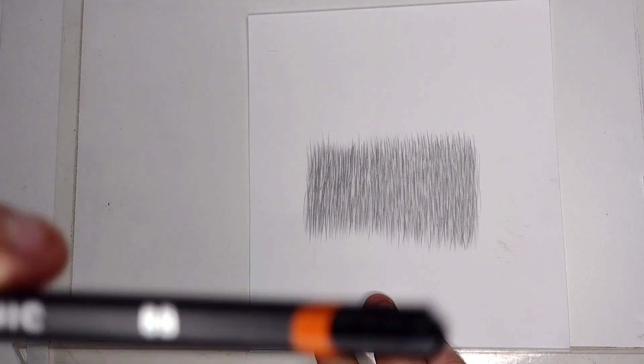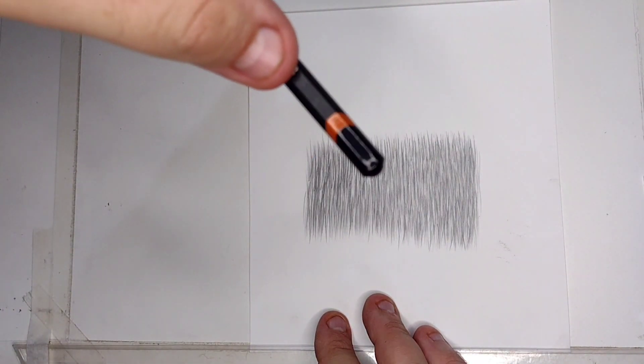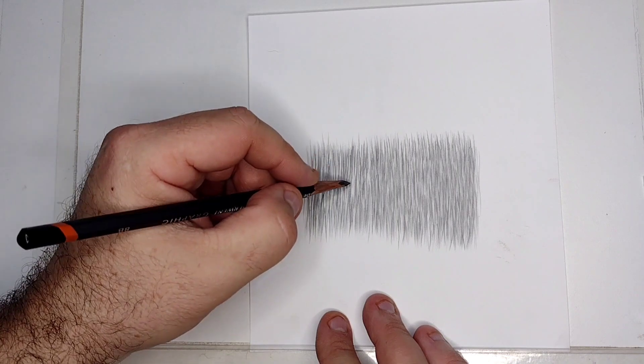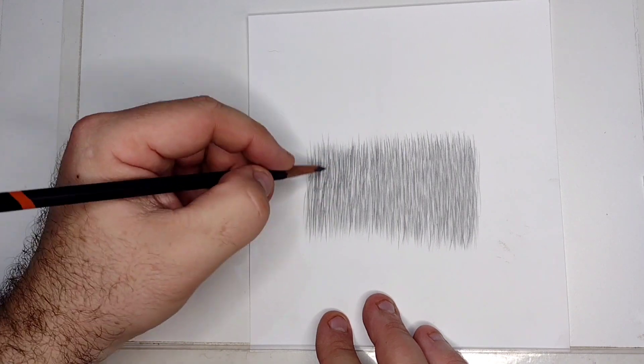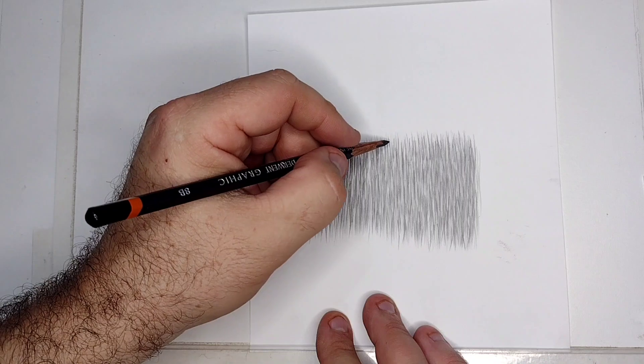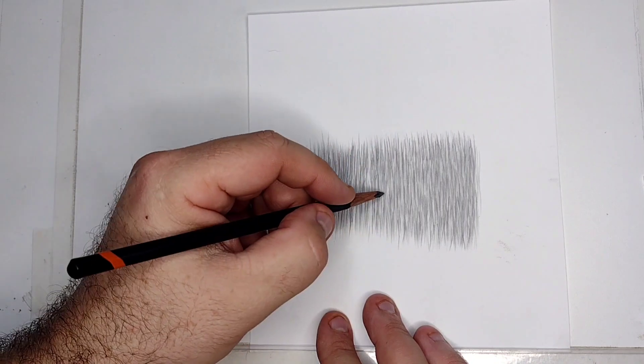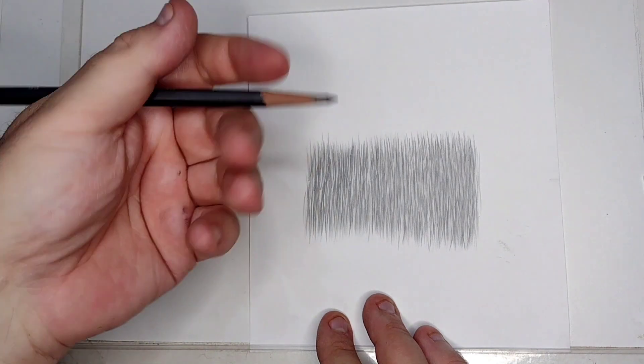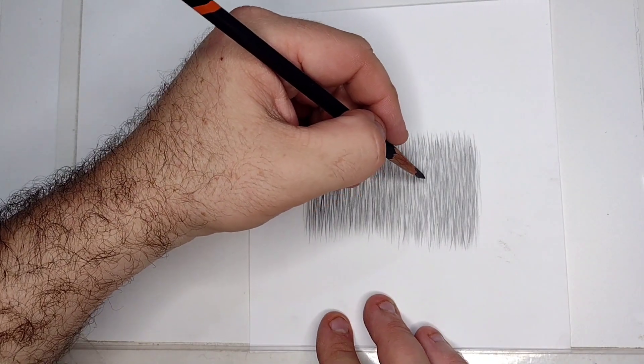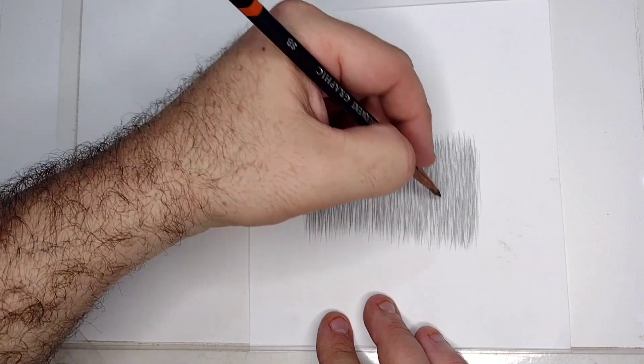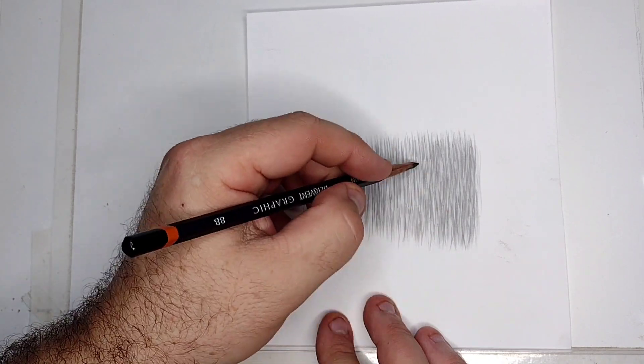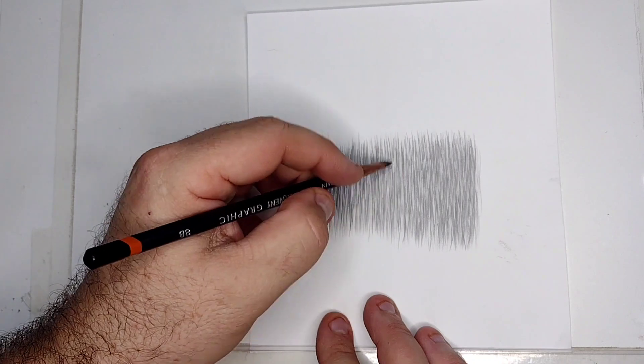Okay, now I'm going to use the 8B. 8B pencil, it's way darker. Just be careful with 4B, 6B, 8B and above. They lose their sharpening very easily, so you start getting thicker fur. So this is one disadvantage for you if you want to keep consistent the same texture.